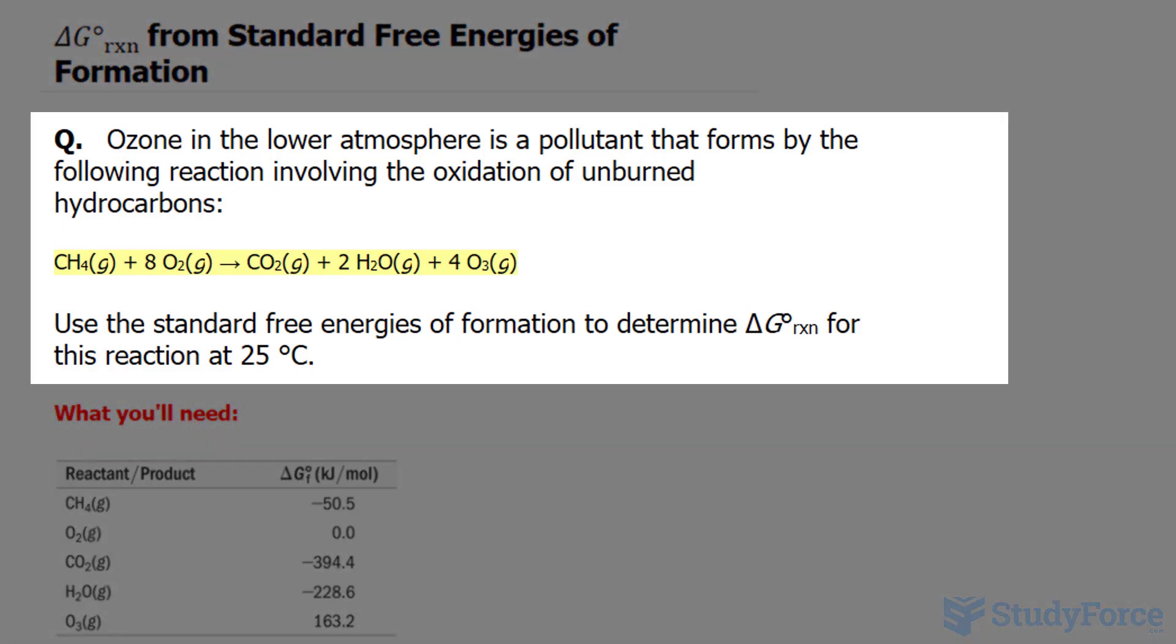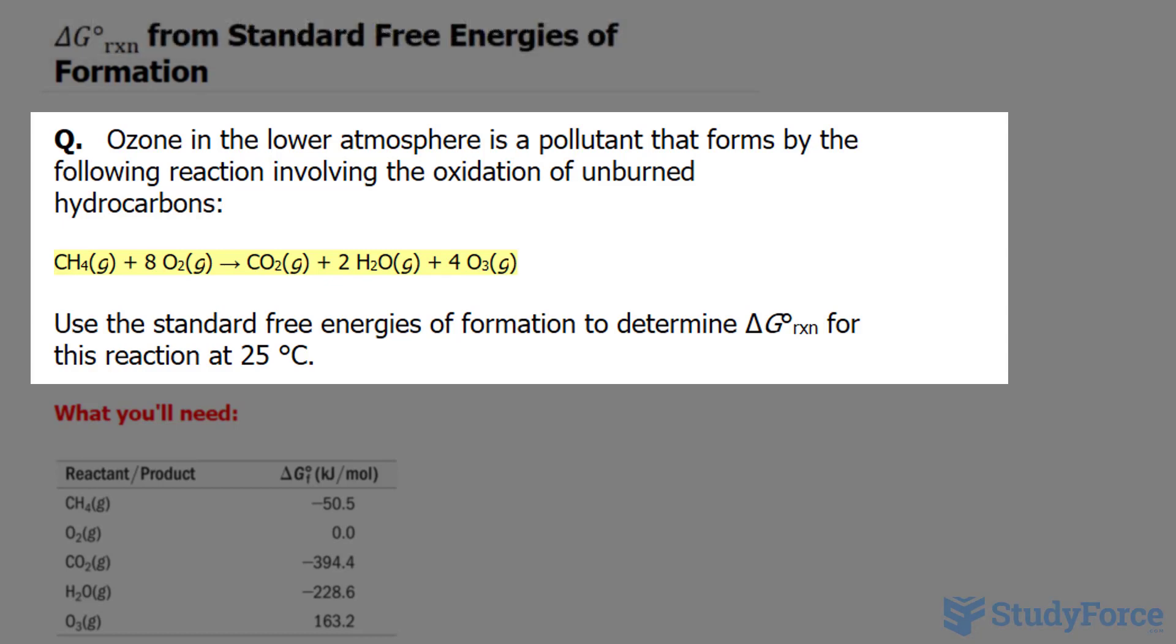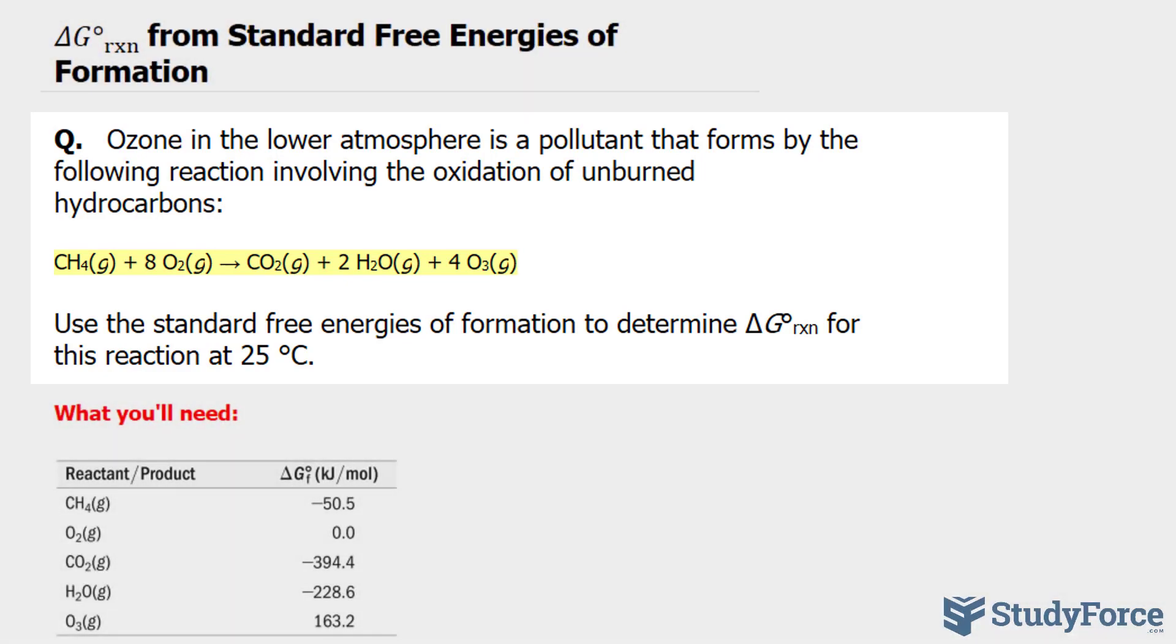The first of three questions asks: ozone in the lower atmosphere is a pollutant that forms by the following reaction involving the oxidation of unburned hydrocarbons. Use the standard free energies of formation to determine delta G for the reaction at 25 degrees Celsius.